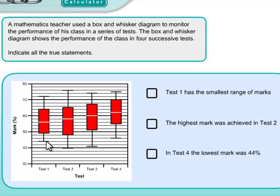So if we look at the smallest mark in test four, you can see four, the minimum mark is one notch higher, and the highest mark is actually one and a half notches higher. So that means that test one does have the smallest range of marks.